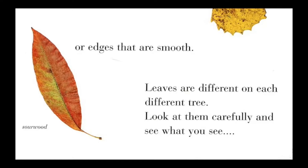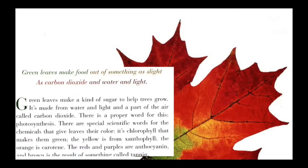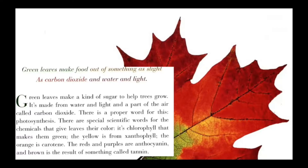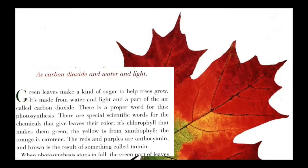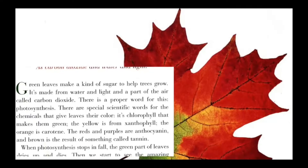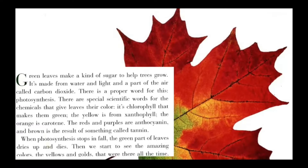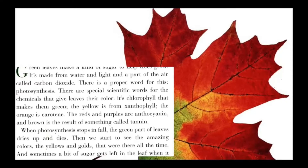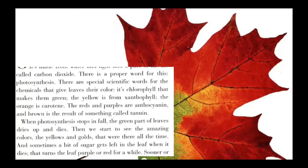Green leaves make food out of something as slight as carbon dioxide, water, and light. Green leaves make a kind of sugar to help trees grow — it's made from water, light, and carbon dioxide. The proper word for this is photosynthesis. There are special scientific words for the chemicals that give leaves their color: chlorophyll makes them green, xanthophyll makes yellow, carotene makes orange, anthocyanin makes reds and purples, and tannin results in brown.